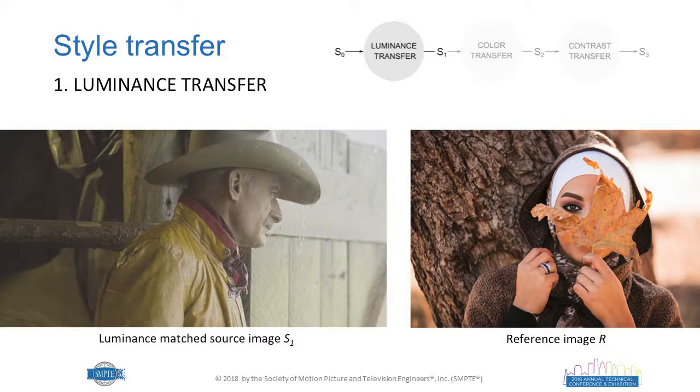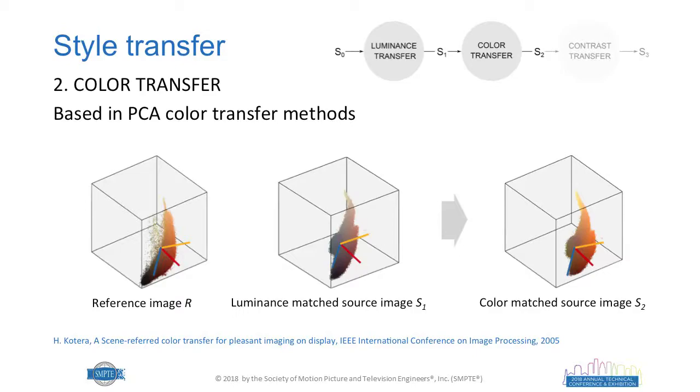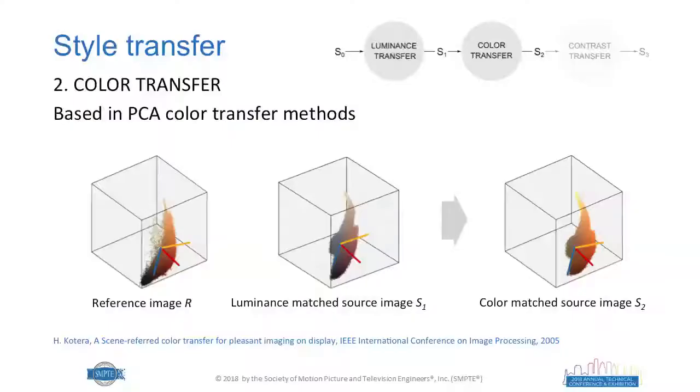After this, we go to the color transfer step, where we follow a statistical-based approach. We perform principal component analysis (PCA) on both the source and reference images to find the main axes of each image's color distribution. The mean of the source image is moved to the mean of the reference image, and the standard deviations along each PCA axis are stretched or reduced to match those of the reference.